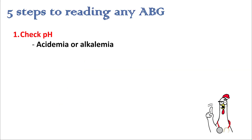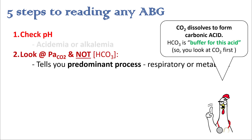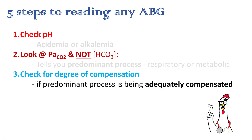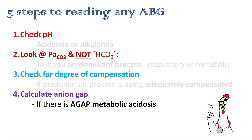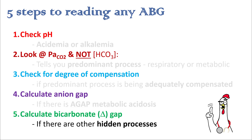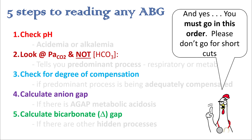The five steps to reading any ABG: Step one, check your pH and figure out if it is acidemia or alkalemia. Step two, look at your pCO2 — not the bicarb. This tells you the predominant process, whether respiratory or metabolic. Step three, check the degree of compensation. Step four, calculate the anion gap. Step five, calculate the bicarb or delta gap, which tells you if there are hidden processes besides anion gap. You must go through all five steps in this order.